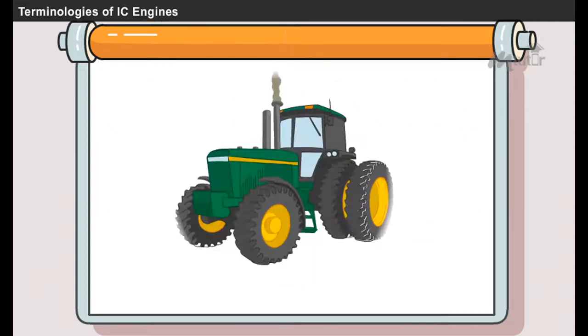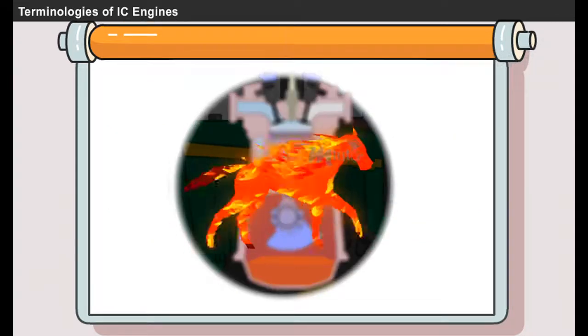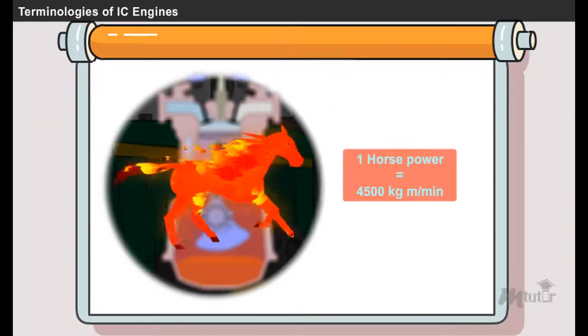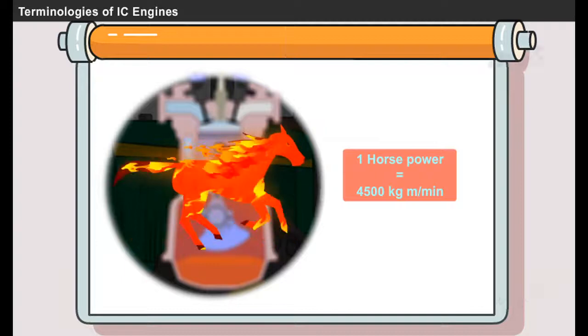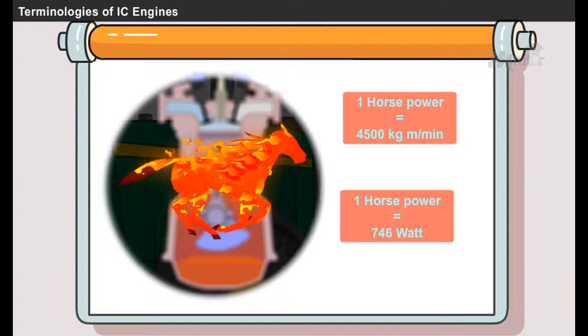The rate at which the engine can do work is measured in horsepower, that is HP. One HP is equivalent to 4500 kilogram meter per minute, and in terms of watts it is 746 watts.